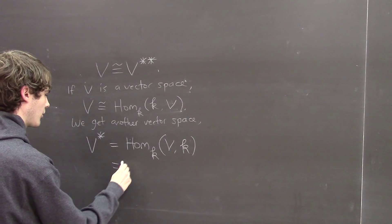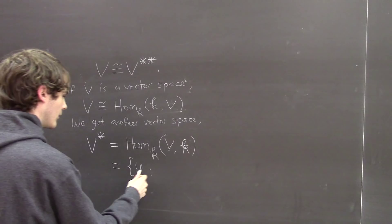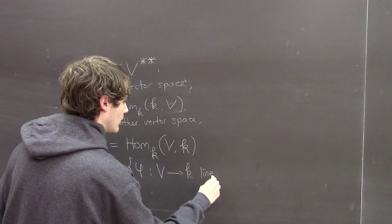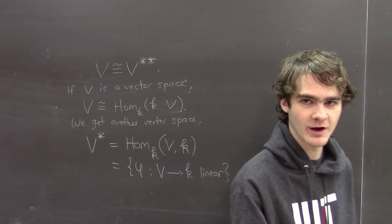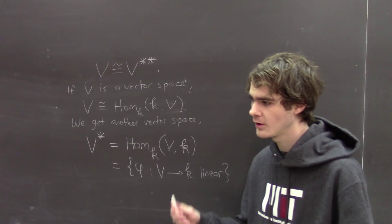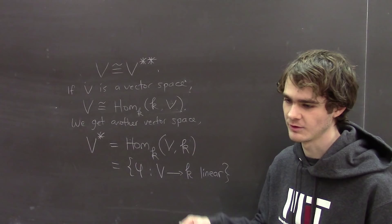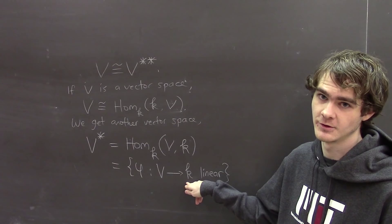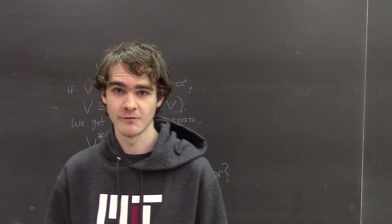In other words, elements of the dual space are linear maps φ from V to K. People have come up with a whole host of names for the elements of this dual space: they're called covectors, linear functionals, and some older books even call them linear functions. Anyway, that's what the dual space is.